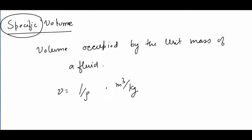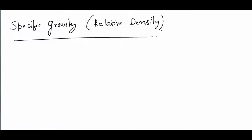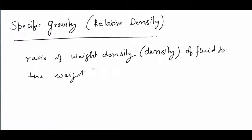Another important property which you'll encounter many times is specific gravity, also known as relative density. This property is defined as the ratio of weight density or density of fluid to the weight density or density of standard fluid. G will get cancelled in this ratio.